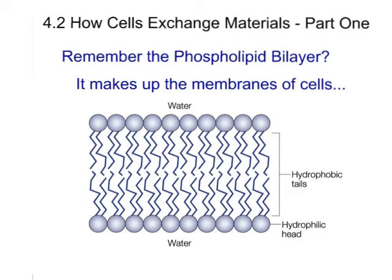Phospholipid bilayers are what make up the membranes of cells. Here we have a cross section of a phospholipid bilayer. We have the heads that are hydrophilic and the tails that are hydrophobic.